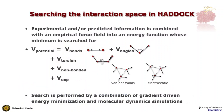So how do we do the interaction search in HADDOCK — the docking effectively? We have experimental information encoded in ambiguous interaction restraints, and we might also have cryo-EM restraints, dihedral angle restraints, and residual dipolar couplings. We combine that experimental energy term with a classical force field as used in molecular dynamics — describing bonds between atoms, angles, rotations around bonds, and non-bonded interactions including van der Waals and electrostatic interactions.